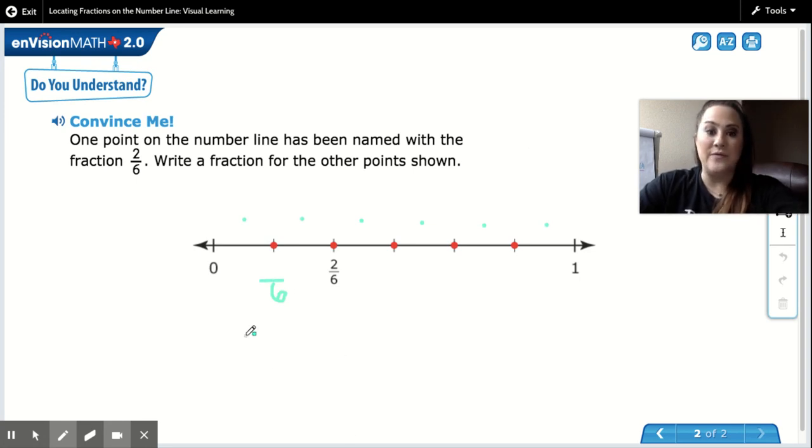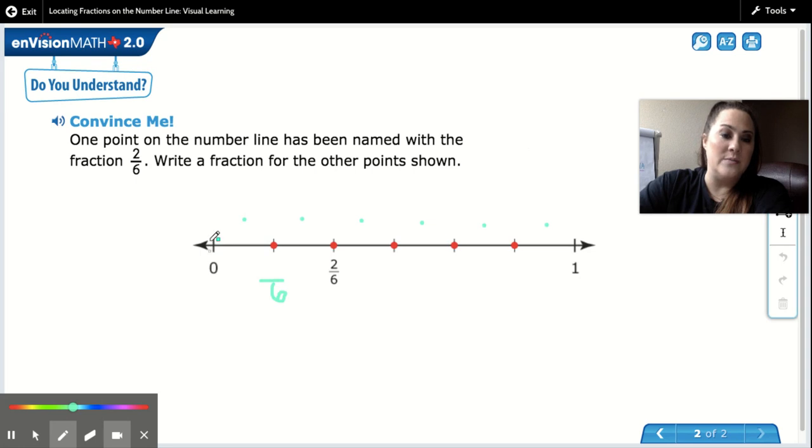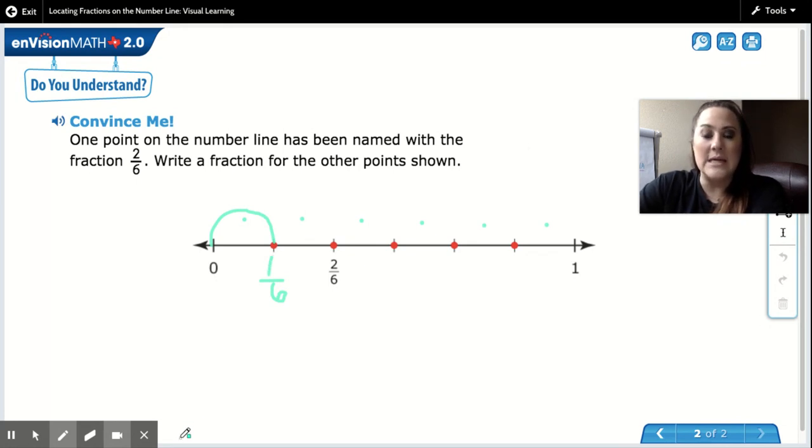Now I will do the first point with you and then you can finish the rest by yourself. So I am going to go from zero to this first point and that is one jump. So I know that that fraction on that number line is one-sixth. Go ahead and finish the last three.